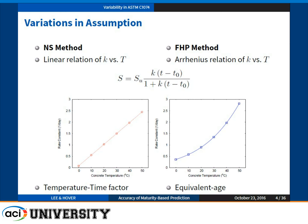Another difference is that for the Nurse-Saul model, you use the temperature-time factor, which is literally the integration of temperature with respect to time. On the other hand, the FHP method uses equivalent age, which is the integration of the age conversion factor — the rate constant ratio between a particular temperature relative to the reference temperature — integrated with respect to time.